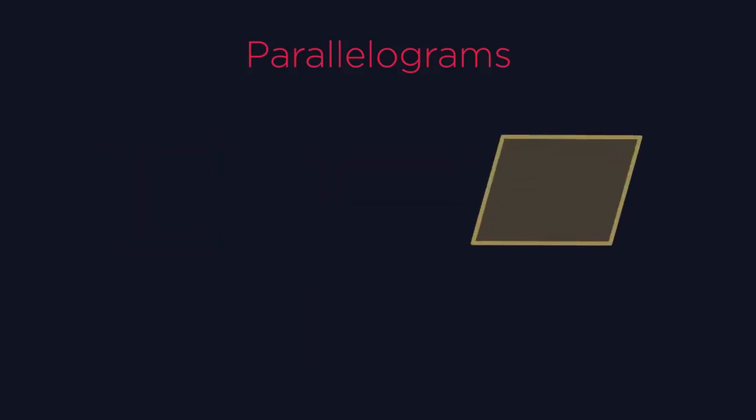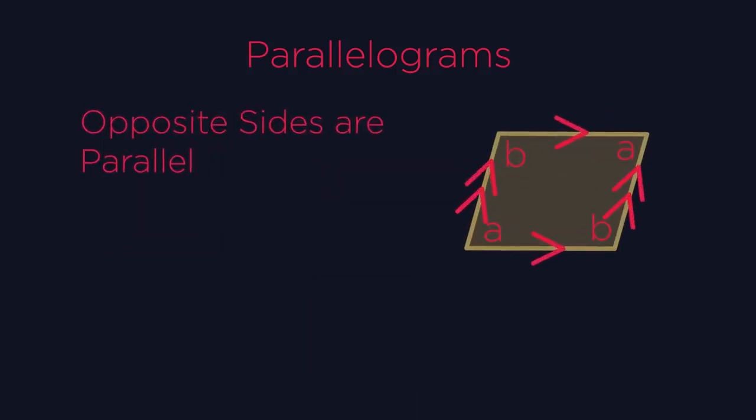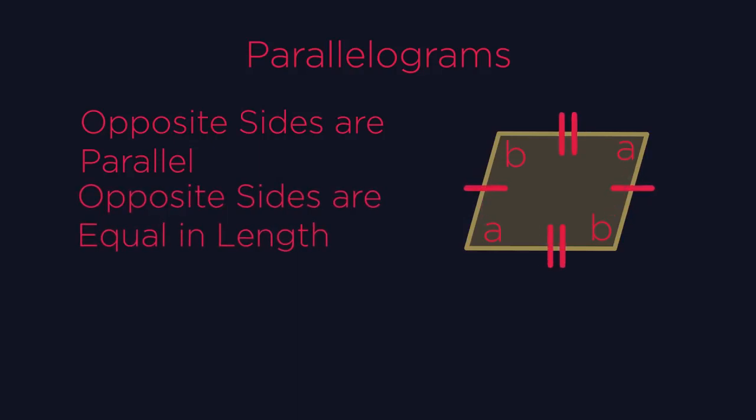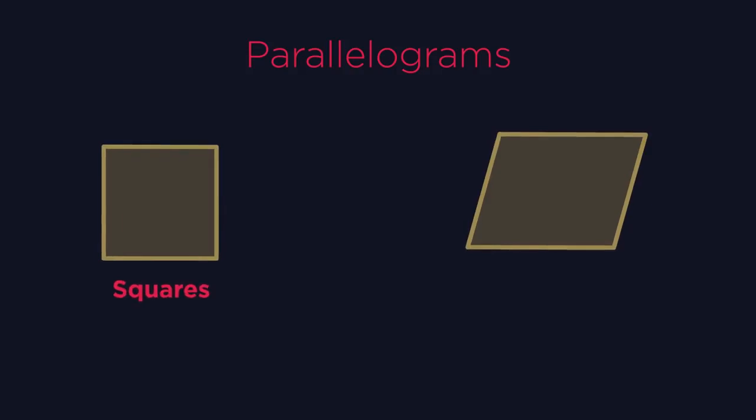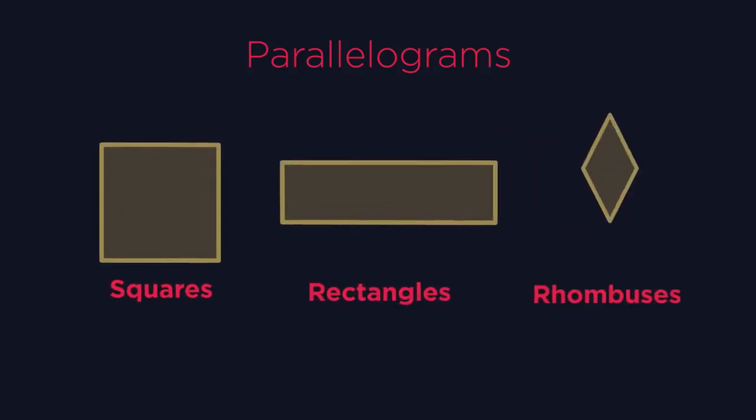They have parallel opposite sides that are equal in length. So these and these. The opposite angles are also equal, like in rhombuses. Squares, rectangles and rhombuses all meet these requirements. Hence, they're parallelograms.